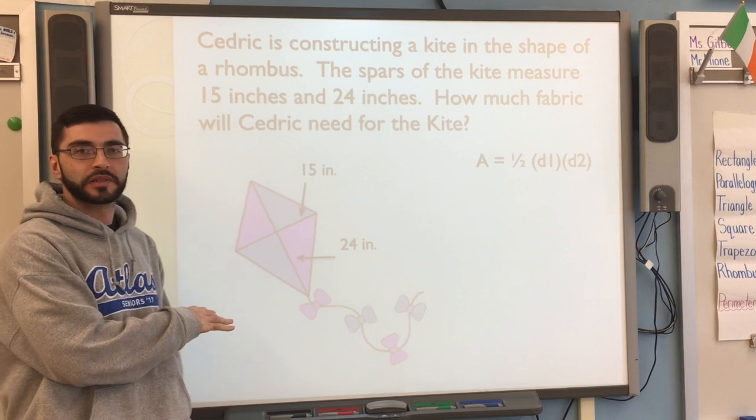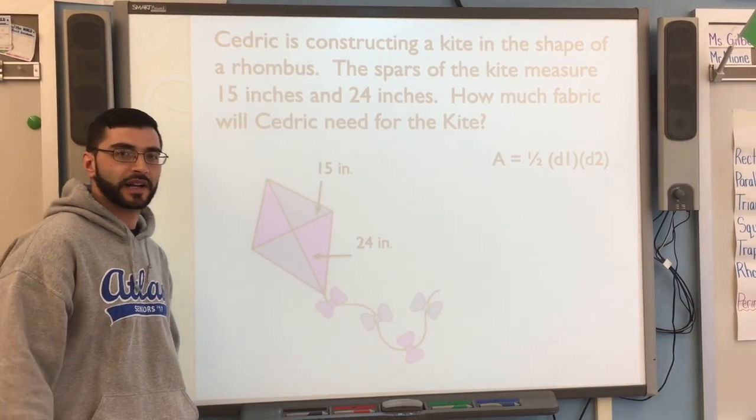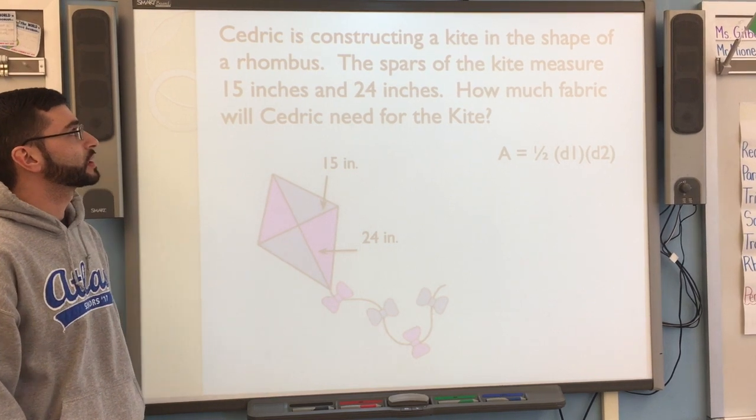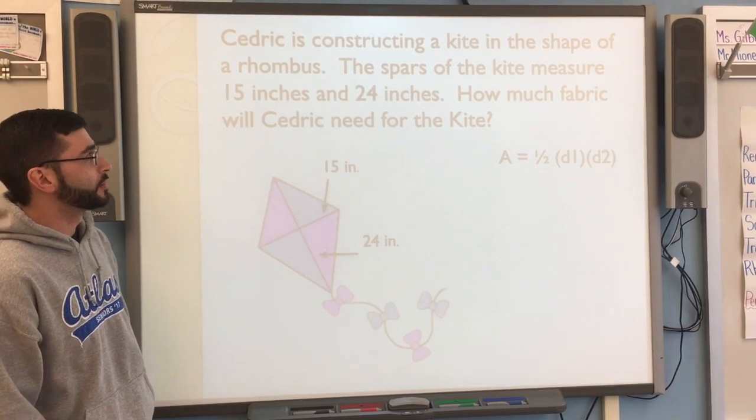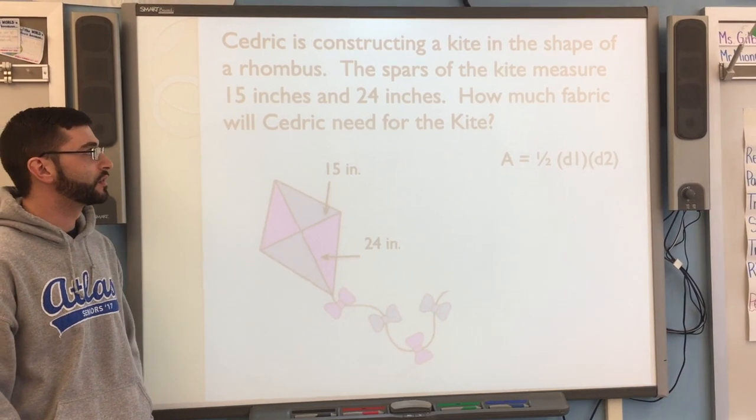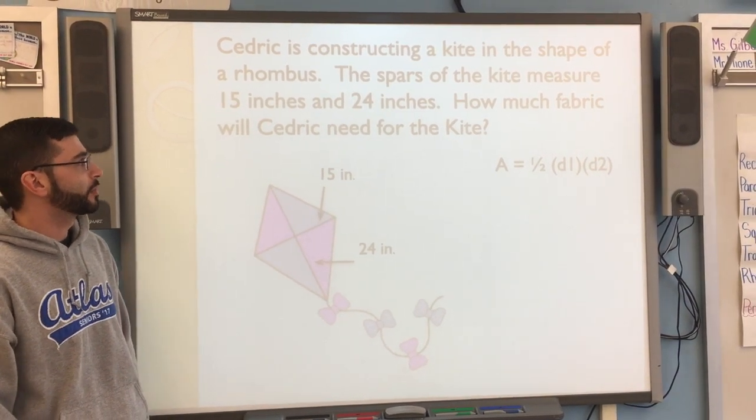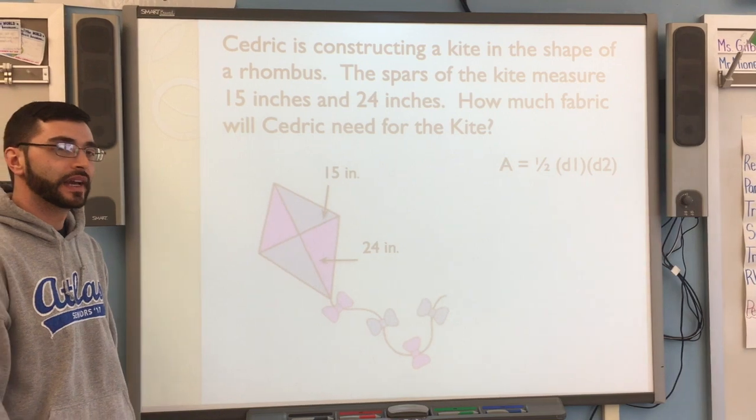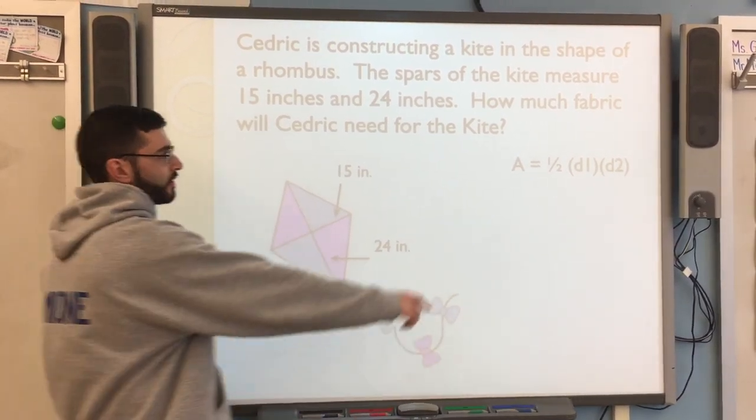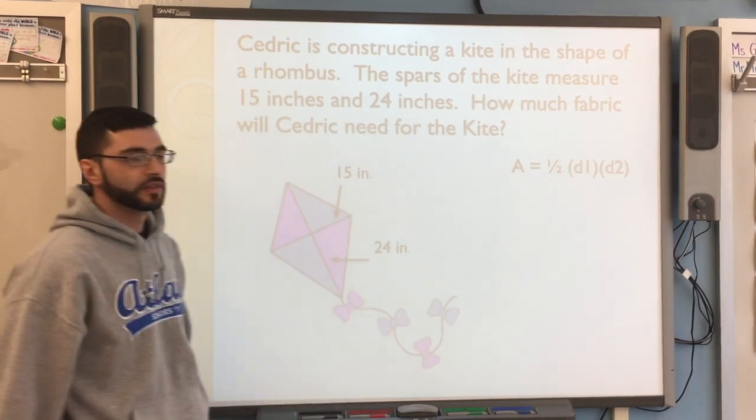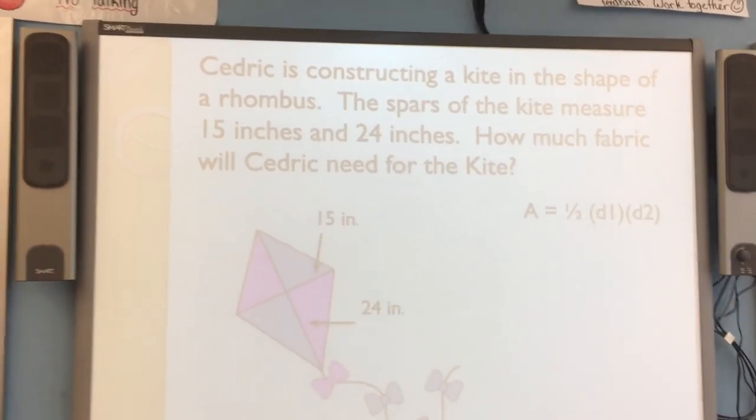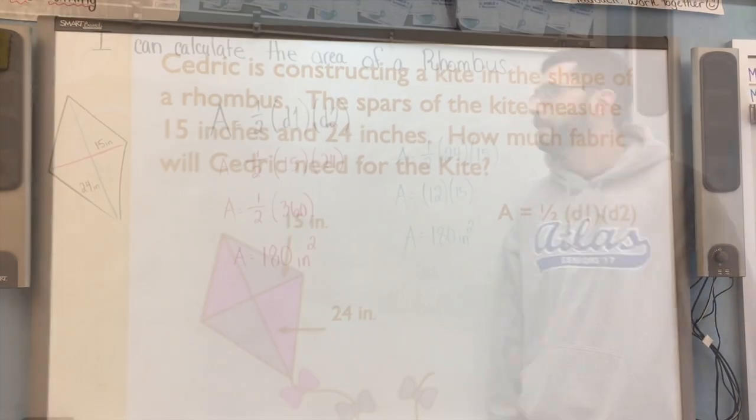So here we have a word problem. This is also going to be your first independent practice. So I'll read that aloud. So it says that Cedric is constructing a kite in the shape of a rhombus. The spars of the kite measure 15 inches and 24 inches. How much fabric will Cedric need for the kite? So here we have the kite also doubling as our rhombus and our formula is right there. Take a second. You can pause the video and answer the question independently to see how we do.